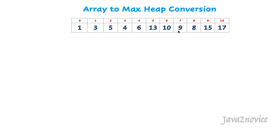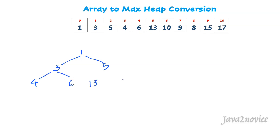Let's assume this is our input array. We will build either a max heap or min heap using this array. It is difficult to visualize an array as a heap in binary tree format, so we will draw this array into a binary tree structure first. The element at index 0 will be the root node, followed by left and right children in order. 3 will be the left child and 5 will be the right child. We continue in the same order till the last element. So this is the binary tree representation of the given array.